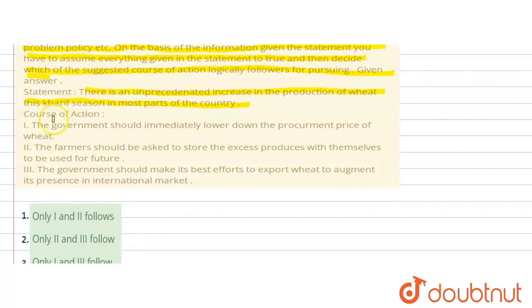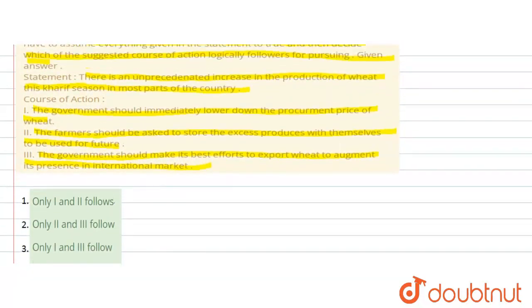First course of action is: The government should immediately lower down the procurement prices of the wheat. Second course of action: The farmers should be asked to store excess produce with themselves to be used for future. Third course of action: The government should make its best effort to export wheat to augment its presence in international market. Four options are given.